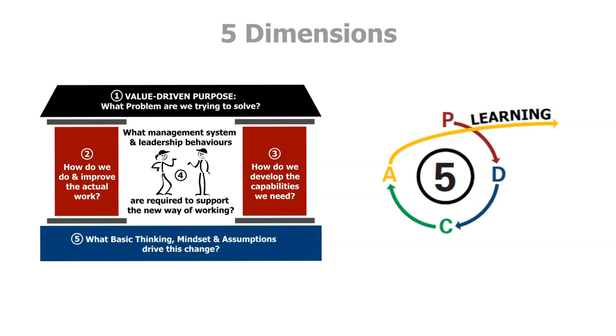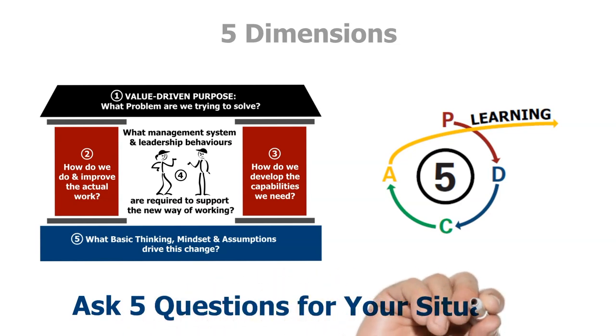The Lean Transformation Framework contends that successful implementation of lean thinking and practice requires change on five dimensions. Lean thinking has a point of view on each of those five dimensions which can be developed through asking five questions.